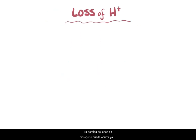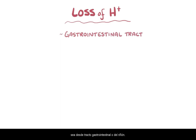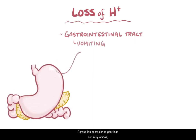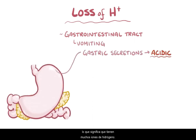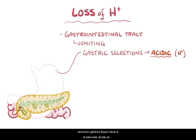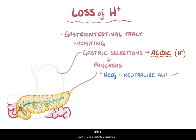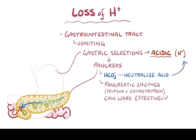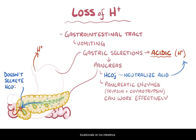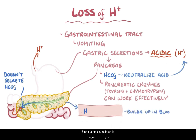Loss of hydrogen ions can happen either from the gastrointestinal tract or from the kidneys. The first case most commonly happens during vomiting, because the gastric secretions are very acidic, meaning that they have lots of hydrogen ions. Normally, as gastric secretions flow into the pancreas, they're met with bicarbonate secretions, which neutralize the acid so that pancreatic enzymes like trypsin and chymotrypsin can work effectively. So during vomiting, not only is the stomach acid lost, but the pancreas doesn't secrete bicarbonate into the intestines, and so it builds up in the blood instead.